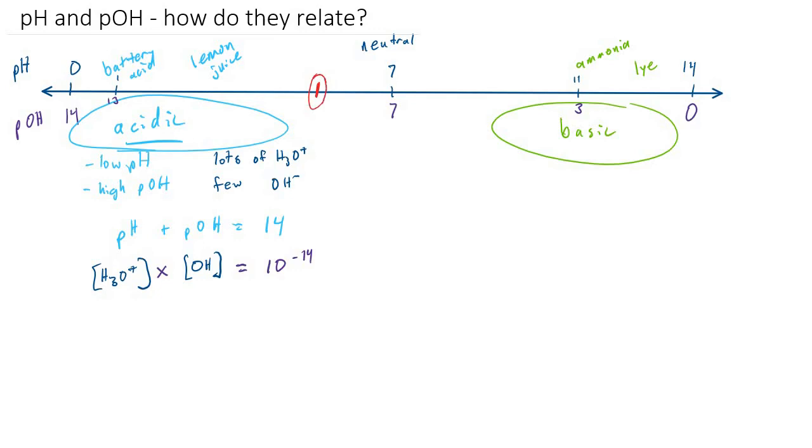Say we have a solution that happens to have a pH of, looks like about 6, so a pOH of 8. We can use those numbers to calculate the hydronium and hydroxide ion concentrations for that particular solution. And if we multiply those two concentrations together, we will certainly get 10 to the minus 14. So it's just another way that helps us calculate from one to the other.